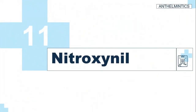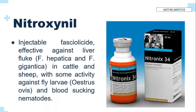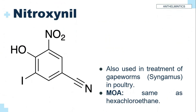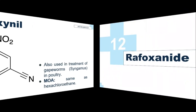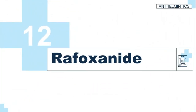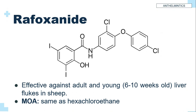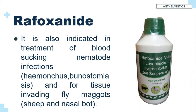Nitroxinil is an injectable fasciolicide effective against liver flukes in cattle and sheep, with some activity against fly larvae and blood-sucking nematodes. It is also used in treatment of gape worms in poultry. Its mechanism of action is the same as hexachloroethane. It is also indicated in treatment of blood-sucking nematode infections and for tissue-invading maggots.